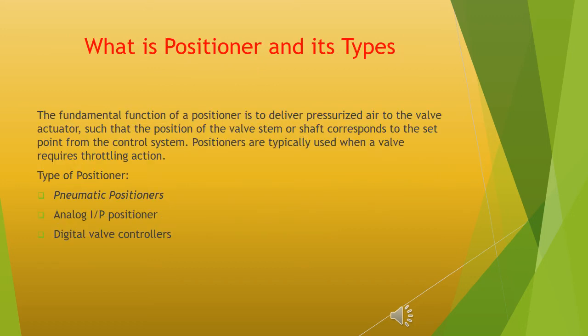What is a positioner and its types? The fundamental function of a positioner is to deliver pressurized air to the valve actuator such that the position of the valve stem or shaft corresponds to the set point from the control system. Positioners are typically used when a valve requires throttling action. Types of positioners: pneumatic positioners, analog I/P positioners, and digital valve controllers.